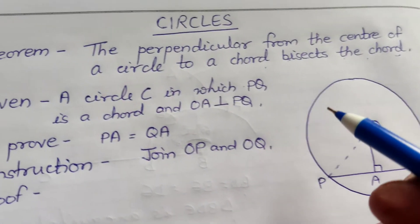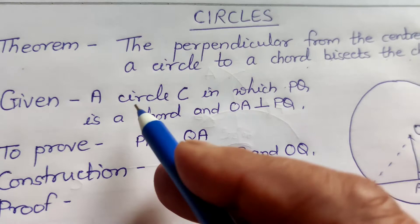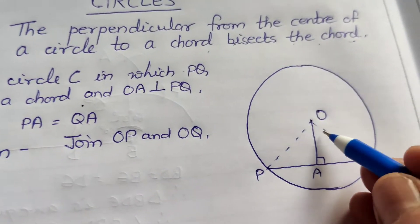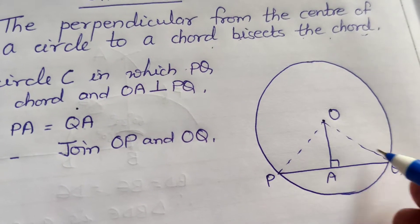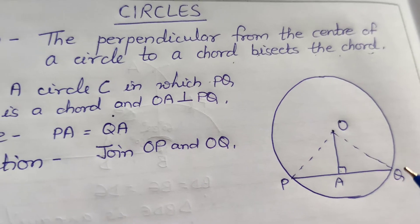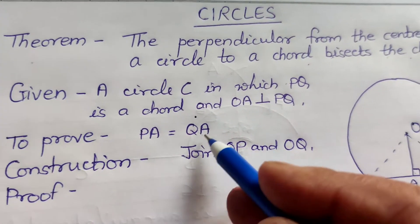Ye theory me prove karna hai. Given: A circle C in which PQ is a chord and OA perpendicular to PQ. PQ chord hai, OA perpendicular hai, ye haomko diya hua hai, 90 degrees. To prove: PA equal to QA.